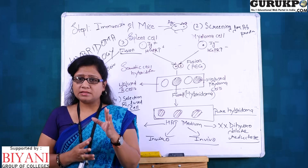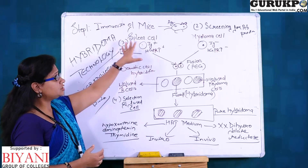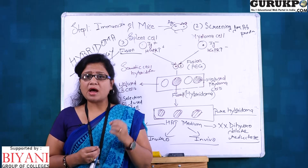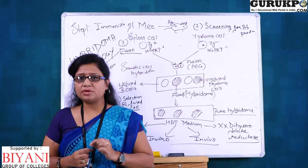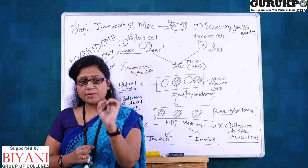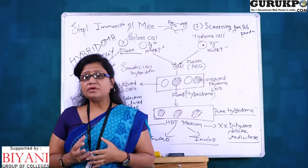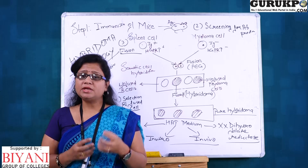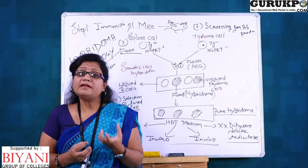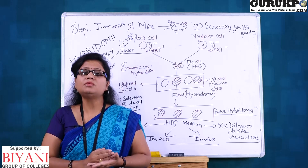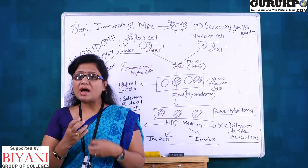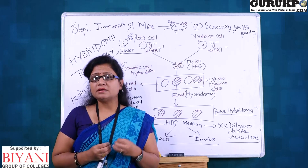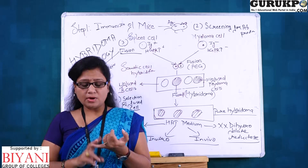First of all, we have to produce antibodies in a model — the model is mice. The first step is immunization of mice for the particular antibody formation. You have to introduce that specific antigen which will stimulate that particular antibody. After a certain period of time following immunization, we get a high titer of antibody in the blood circulation.